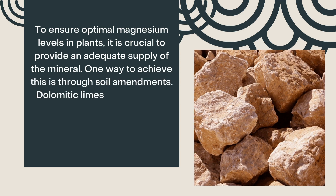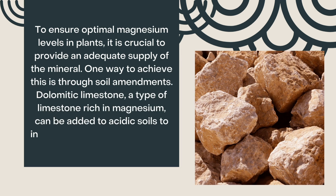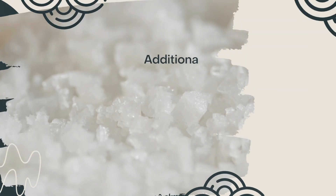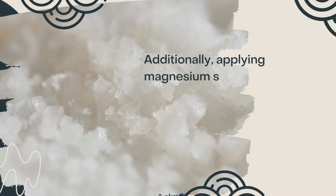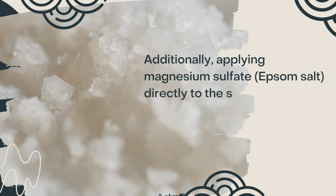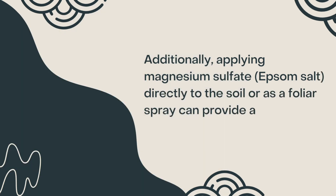To ensure optimal magnesium levels in plants, it is crucial to provide an adequate supply of the mineral. One way to achieve this is through soil amendments. Dolomitic limestone, a type of limestone rich in magnesium, can be added to acidic soils to increase magnesium availability. Additionally, applying magnesium sulfate directly to the soil or as a foliar spray can provide a quick magnesium boost.